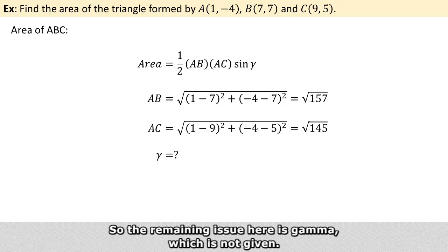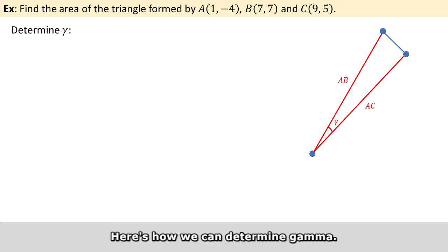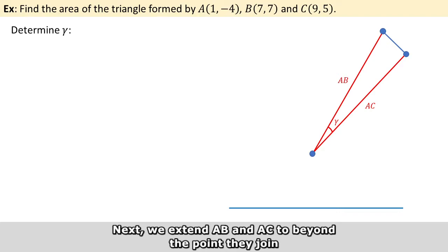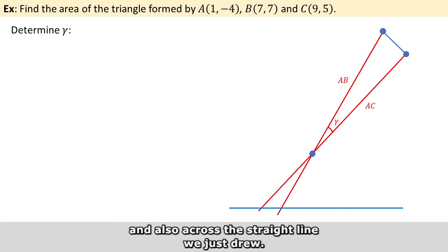So the remaining issue here is gamma, which is not given. Here's how we can determine gamma. First, we can just draw a random horizontal line on the plane. Next, we extend AB and AC beyond the point they join and also across the straight line we just drew.